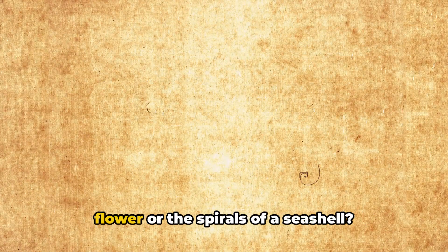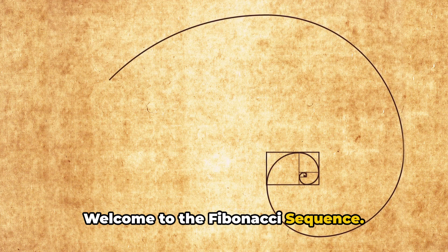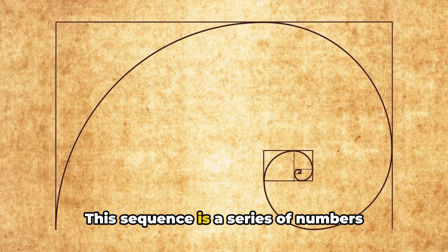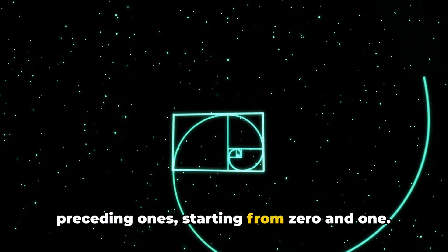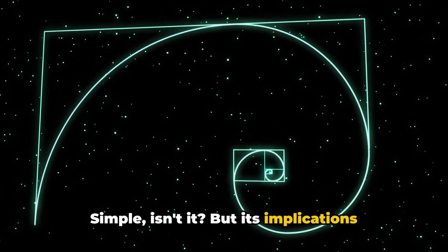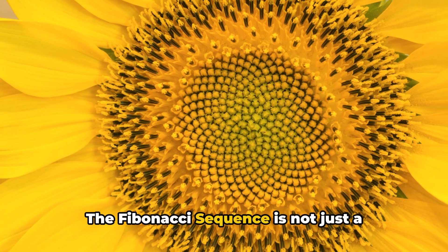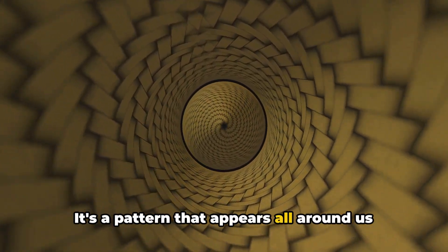Ever noticed a pattern in the petals of a flower or the spirals of a seashell? Welcome to the Fibonacci Sequence. This sequence is a series of numbers where each number is the sum of the two preceding ones, starting from 0 and 1. Simple, isn't it? But its implications are vast. The Fibonacci Sequence is not just a mathematical curiosity. It's a pattern that appears all around us in nature.